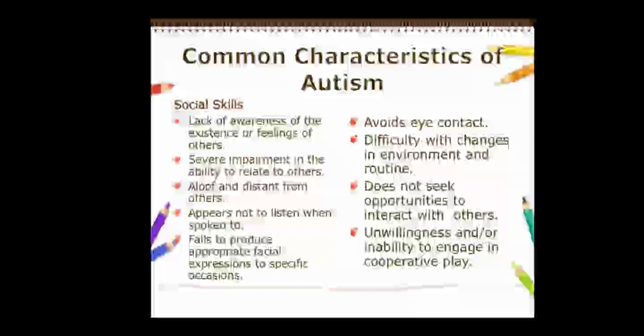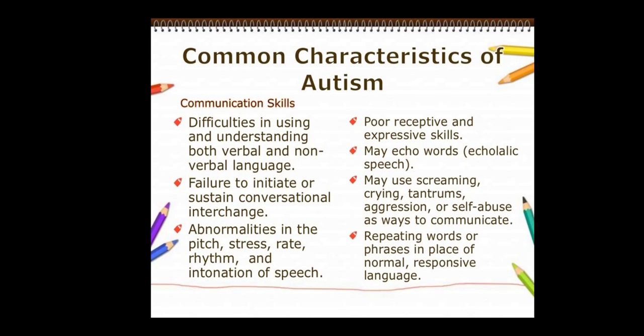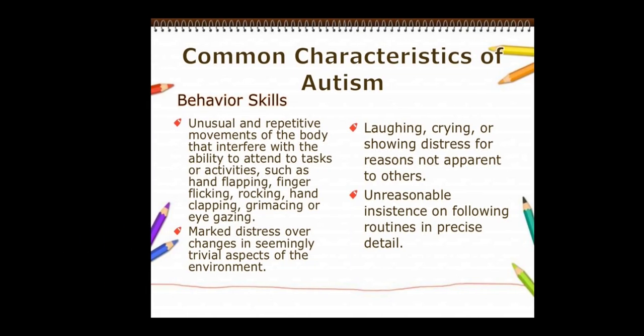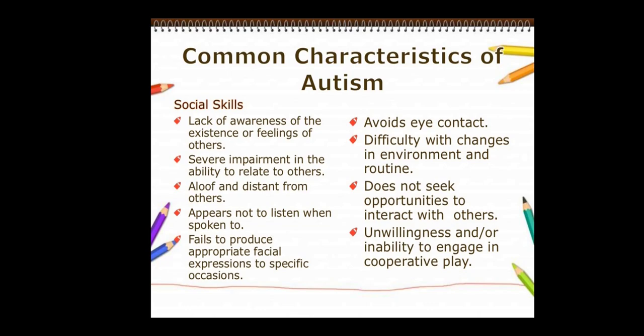Now we will see the characteristics — symptoms of the autistic child in the three main areas. In social skill: there is lack of awareness of the existence and feelings of others — the child remains busy within themselves, not paying attention to surroundings. There is severe impairment in the ability to relate to others and activities. The child appears aloof and distant, preferring to remain lonely.